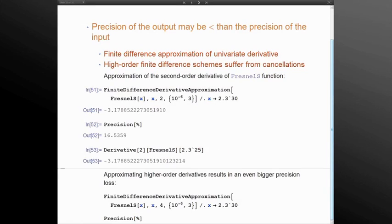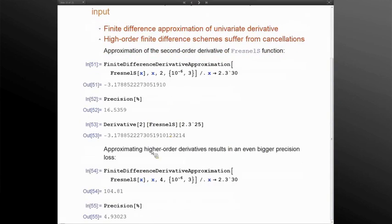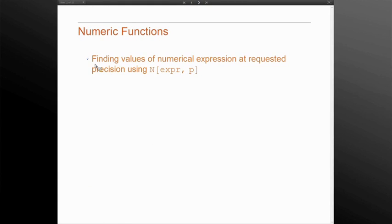Approximating higher-order derivatives will give you bigger precision loss. Order 4 here, you lose 16 digits, so you only get 5 digits correctly. Suppose you would really want to compute the fourth-order derivative using this finite difference method, but you would want 30 digits out.